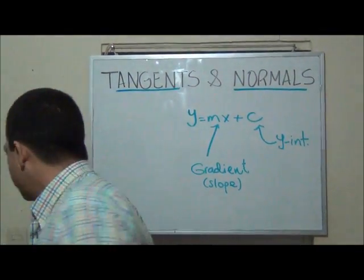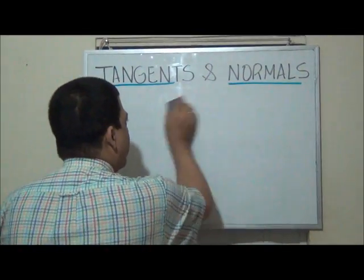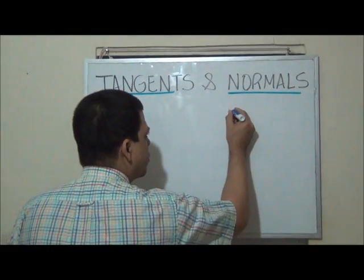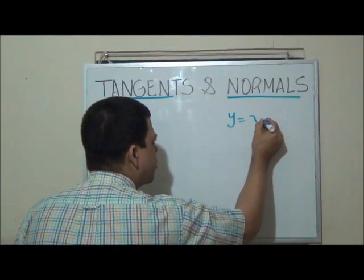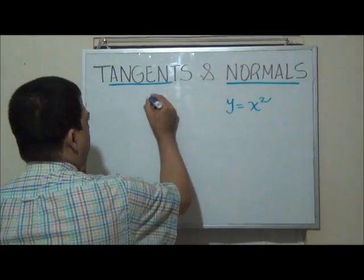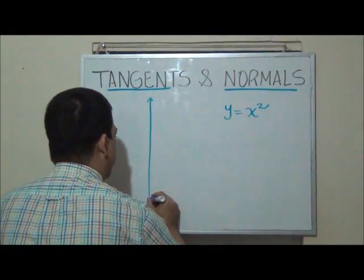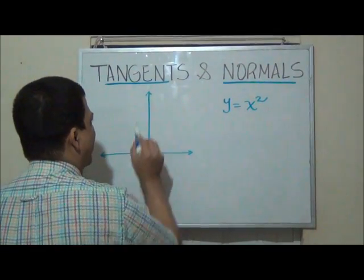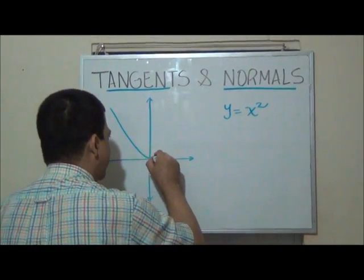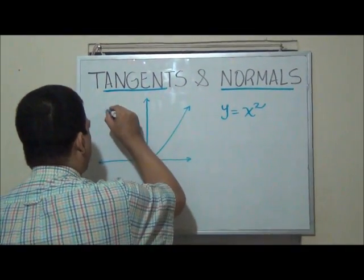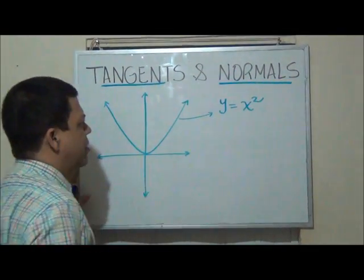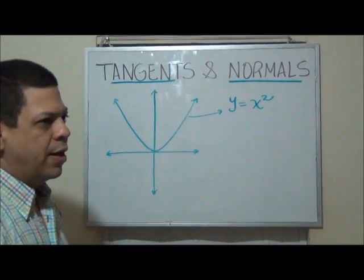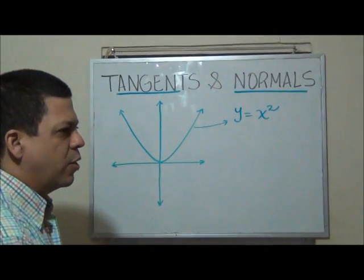Let's suppose that we want to find the tangent to a curve. Let's use a very simple curve such as y equals x to the power of 2. If we have that function and we are going to try to find the tangent to this curve, let's say this is the parabola that results when you graph something like that. We need to find the tangent. But as you see this curve can have many tangents. It all depends on the points.